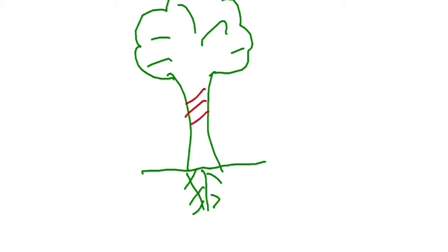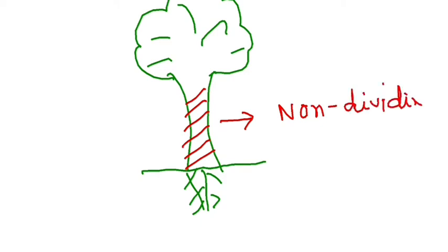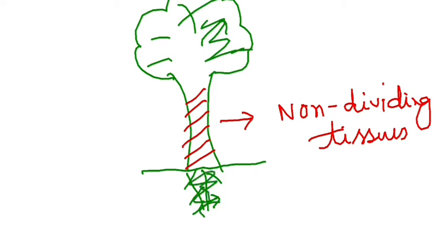Today we shall learn the next concept in the chapter on tissue. Before moving on, let's recall what we learned last class. In a plant, all the regions don't grow uniformly — some regions grow more actively and some grow passively. The non-dividing tissues are in certain portions, while the stem section and root section consist of dividing tissues.